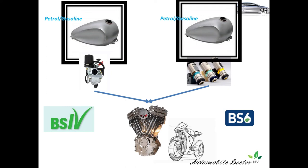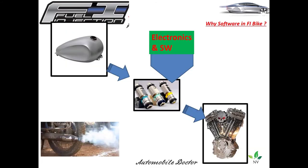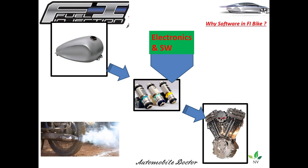In BS6, fuel comes and then goes to a fuel injection system — an injector — then it is poured into the engine. The only difference is the injector. This is the key thing used in BS6. Even if you accelerate, what is good for combustion and good for mileage is only what gets injected into the engine — that is the fuel injection system. For this, software is required. When to inject, how to inject, how much to inject — these things are controlled by software. That is why we need software in a fuel injection bike.